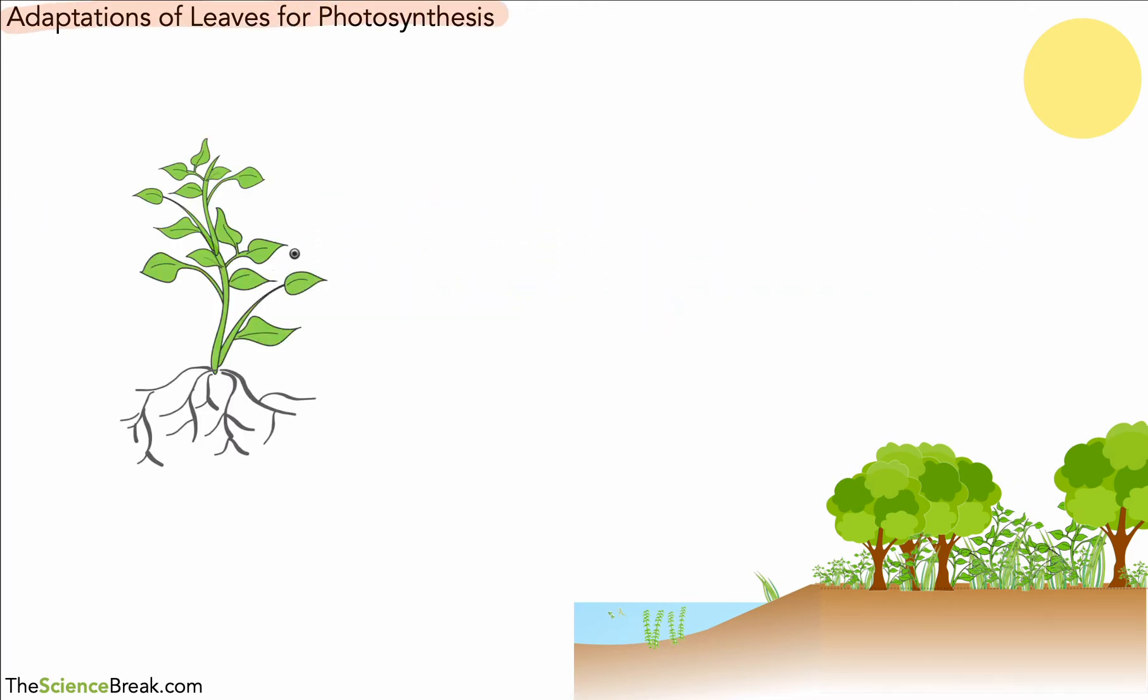Now just as a recap, in the video just before this one we looked at photosynthesis. We said that carbon dioxide diffuses into leaves for this process. Oxygen is a product which diffuses out of the leaves. We said that water was also needed and that went in through the roots.